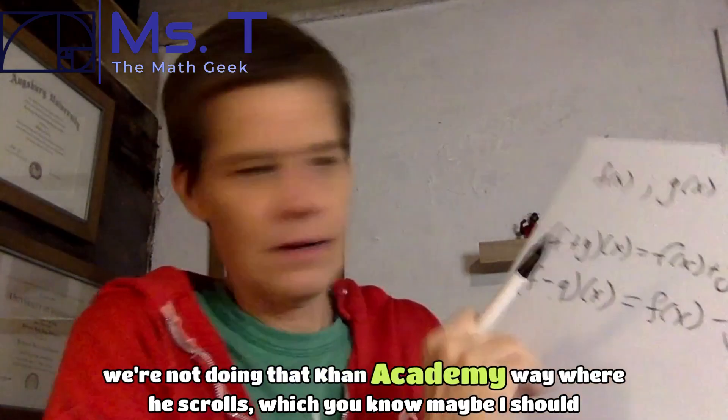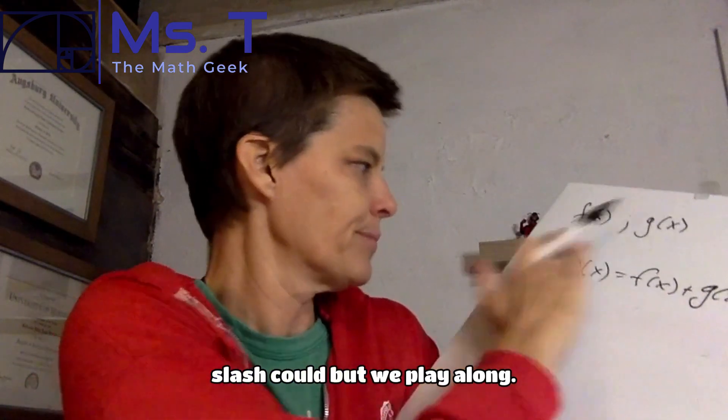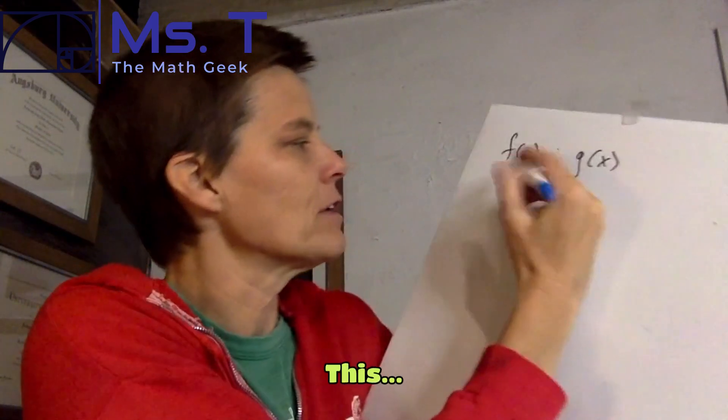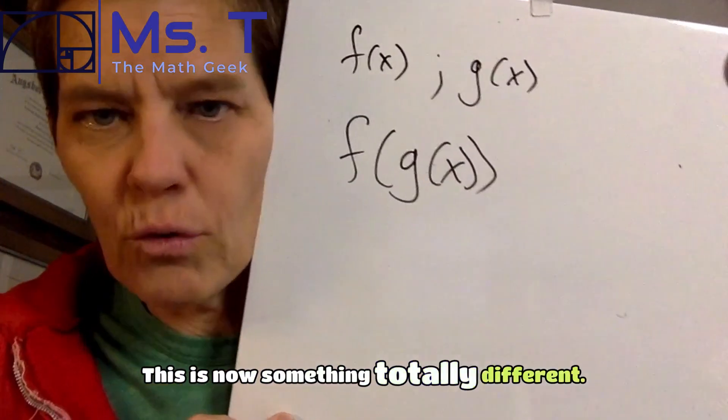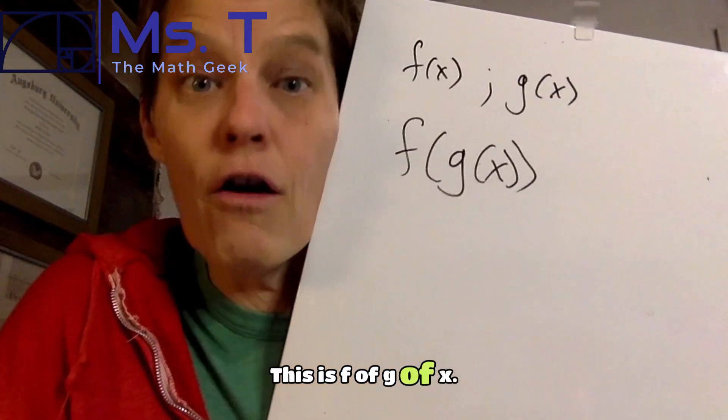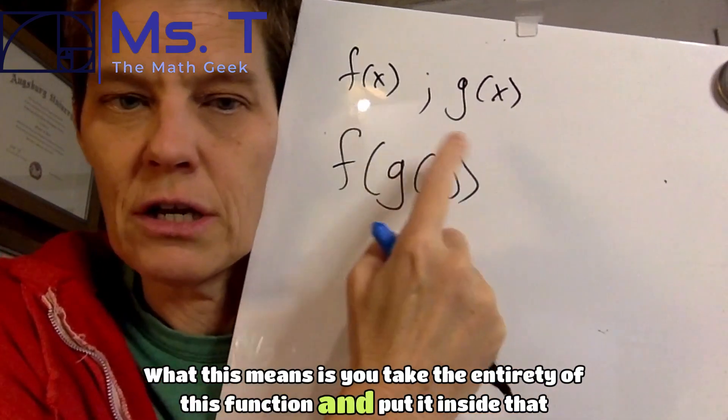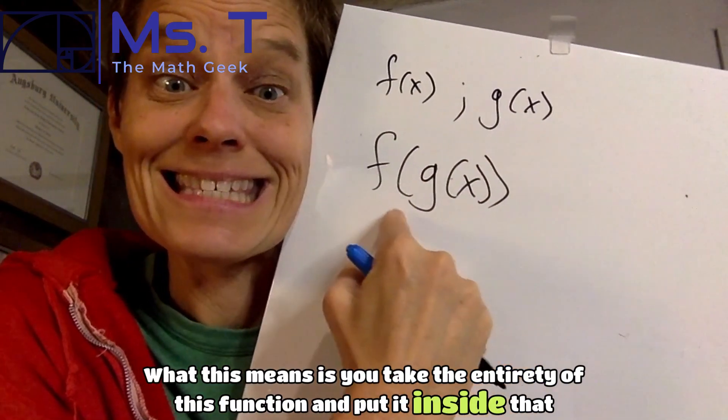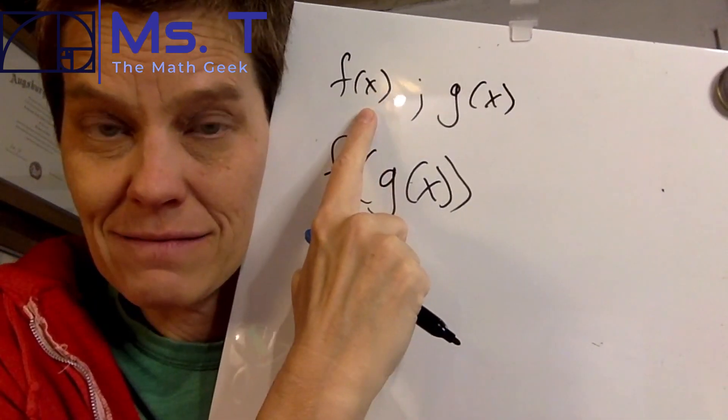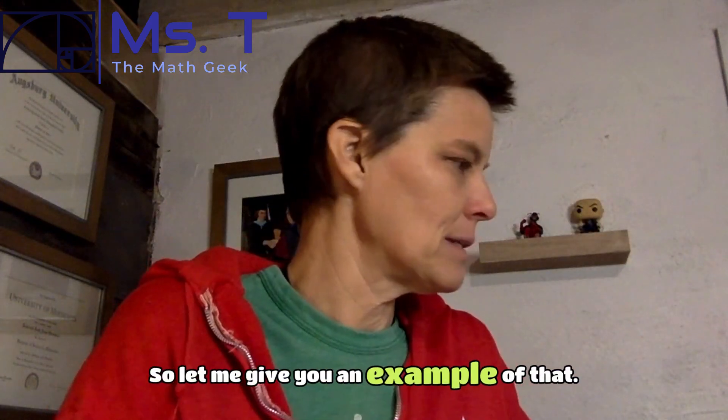We're not doing the Khan Academy way where he scrolls, which, you know, maybe I should slash could, but we play along. Okay, now this is something different. This is now something totally different. This is f of g of x. What this means is you take the entirety of this function and put it inside that function as if it's x. And that changes a lot of things. So let me give you an example of that.